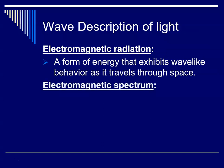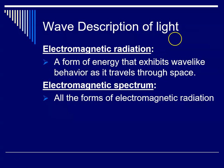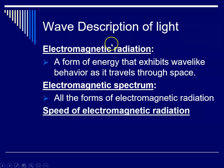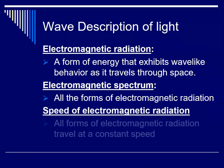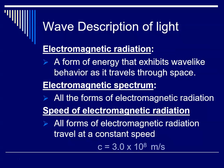And when we talk about the electromagnetic spectrum we're talking about all the forms of electromagnetic radiation that exist in our universe. And it turns out that the speed of all electromagnetic radiation in our universe is a constant. So all electromagnetic radiation travels at a constant speed and it's given the variable c and that speed is 3.0 times 10 to the eighth meters per second.